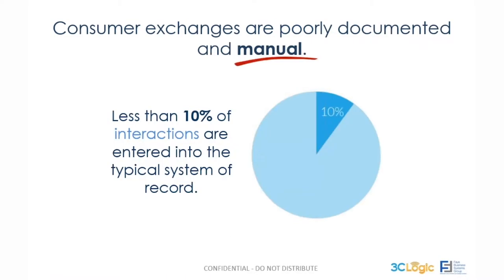Some other problems are fairly basic. With the advent of CRM, the idea was to consolidate information so there'd be a central location for organizations and employees to leverage and gain insight into the customers they service. The accuracy of a system of record like Sugar CRM is only as dependable as the individuals utilizing it — and most CRM data entry being largely manual means less than 10% of any customer engagement is actually entered into the system.